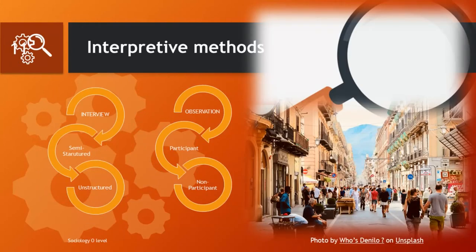Interpretive sociologists use two main methods. They use interviews, but not structured — rather semi-structured and unstructured interviews. And they also use observation, which can be participant observation or non-participant observation.